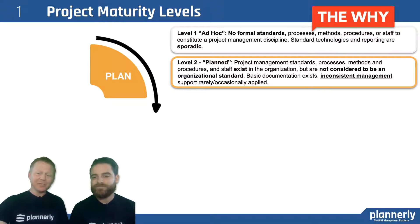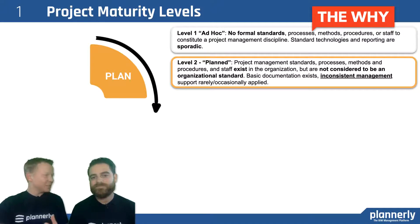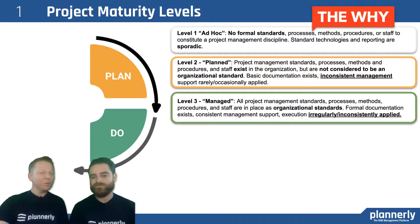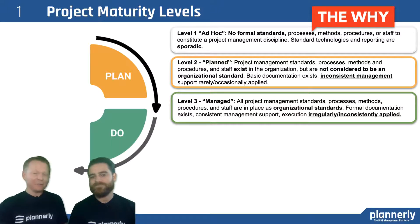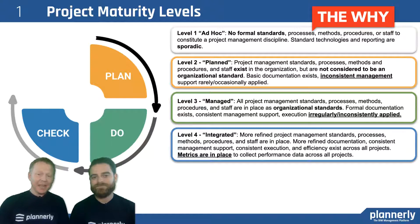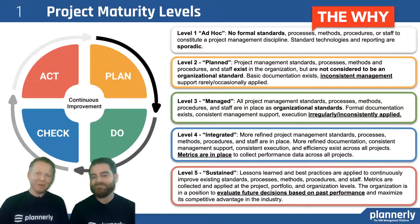The second level in the maturity process is being planned — you start to have some kind of operational standard, but it's inconsistently managed. The third level is when you've got a plan and you start actually carrying it out — you're in the managed level, with organizational standards that are irregularly followed. Then as you integrate those into your workflow, you start checking, you have metrics in place, and you start to understand performance across a company.